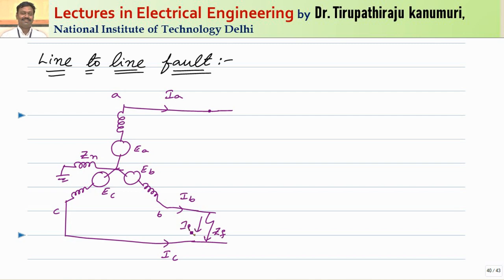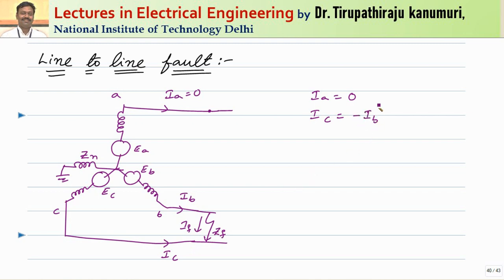Let us assume the fault current direction. This is the fault current. Because it is an unloaded generator, Ia is equal to 0. The direction of Ic is opposite to the direction of Ib because they are connected together, so Ic will be equal to minus Ib. Let us take this as equation number 1.